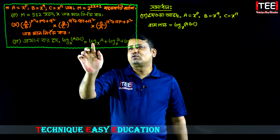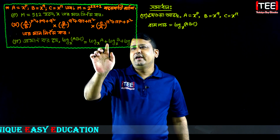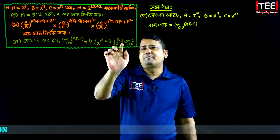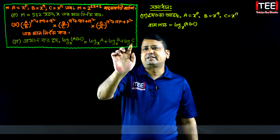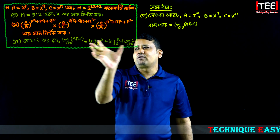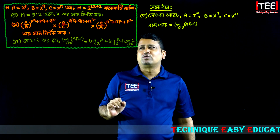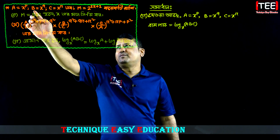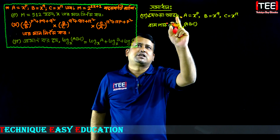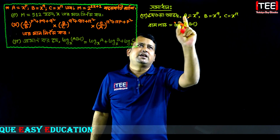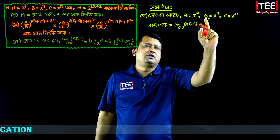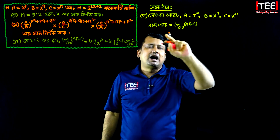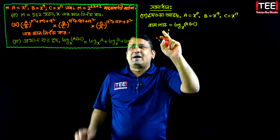a, b, c equal to log x base a plus log x base b plus log x base c. Meaning eta equal to eta. So we call it aso-man, b, x base a. So we call it aso-man x to the power b, b, x base q, x base r. So we call it aso-man.